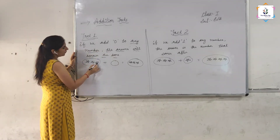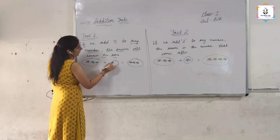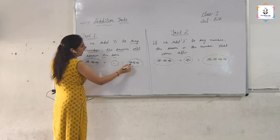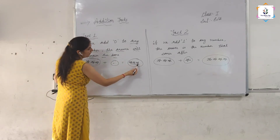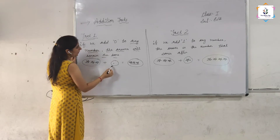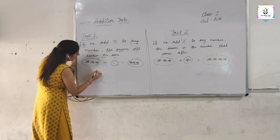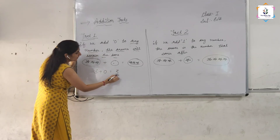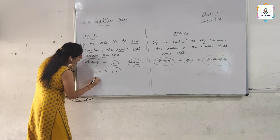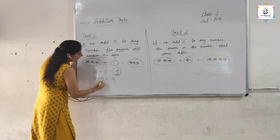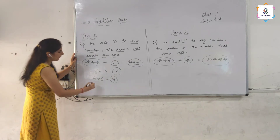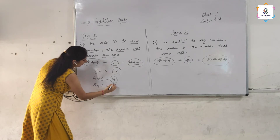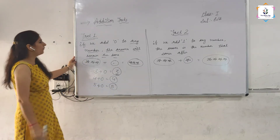Here 3 stars: 1, 2, 3. 3 plus zero — if we add zero to any number, the answer will remain the same. 3 plus zero is equal to 3. 4 plus zero is equal to 4. The answer will remain the same. 5 plus zero is equal to 5. The answer will remain the same.